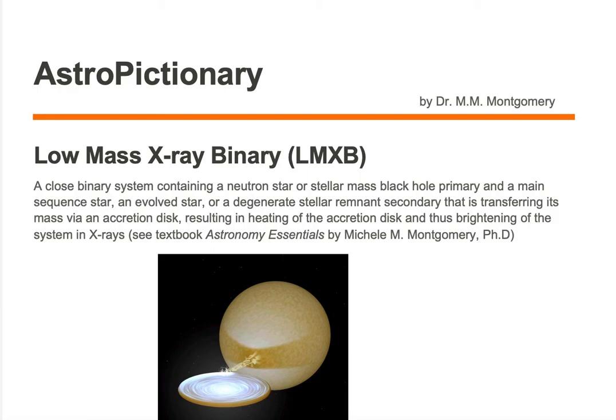A low-mass x-ray binary, or LMXB for short, is a closed binary system containing a neutron star or stellar mass black hole primary and a main sequence star, an evolved star, or a degenerate stellar remnant secondary that is transferring its mass via an accretion disk, resulting in heating of the accretion disk and thus brightening of the system in x-rays.